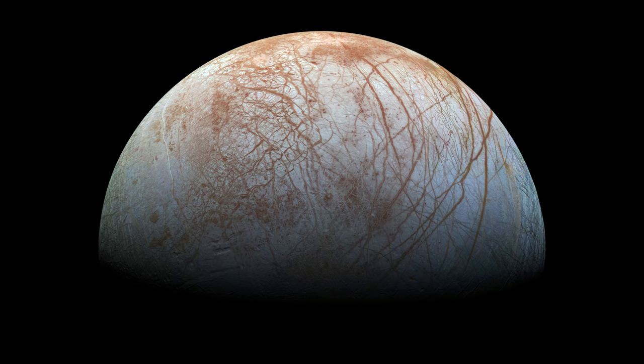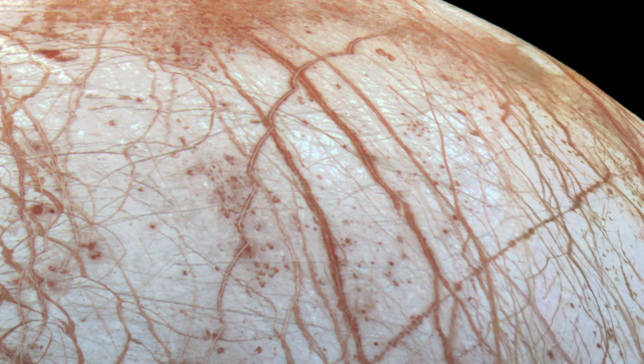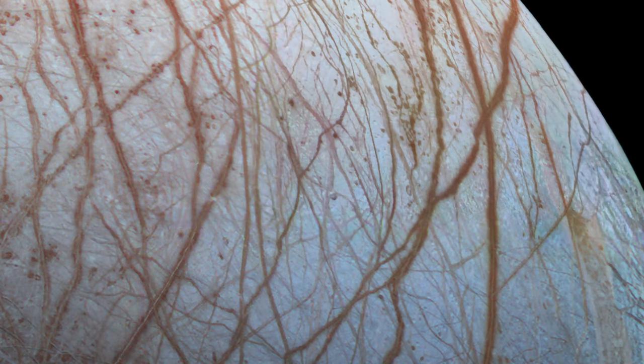However, this doesn't appear to be the answer on Europa, because there are so many cycloid curves and they overlap in tons of places, and none of them really show signs of one piece of the surface being pushed under another.